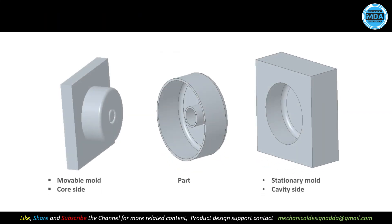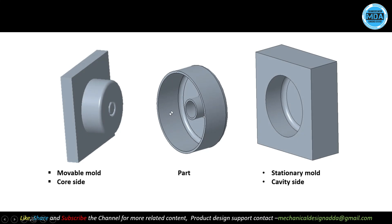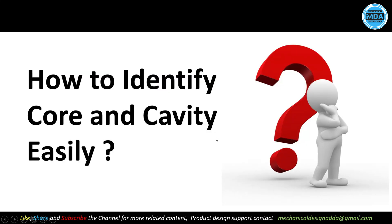Here is an example: for this part there are two mold halves — one is the movable mold and the other is the stationary mold. From the stationary mold we inject material through the gate and runner, and from the movable mold we have the ejector pins. The movable mold is generally called the core side, and the stationary mold is called the cavity side, because here material is removed and the cavity is formed. The core is extended from the mold surface and forms the internal surfaces, while the cavity forms the external surface.